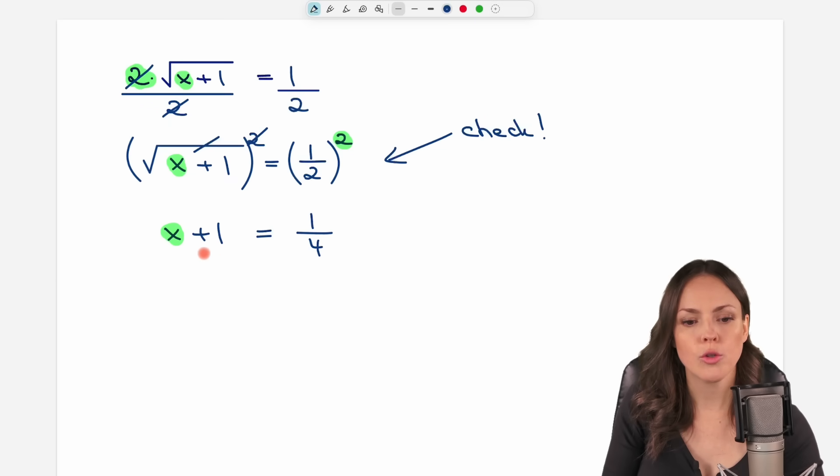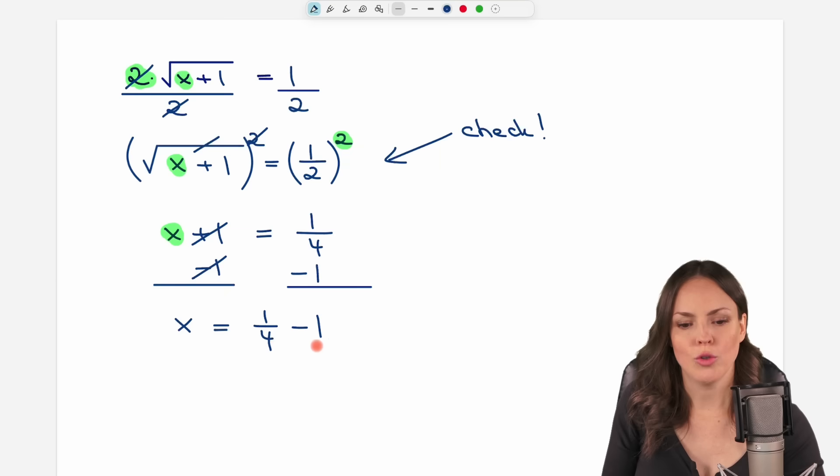We just want to solve for x, so we subtract the 1 on both sides of the equation so that we only have our x here, because this cancels out. On the other side, we have 1 over 4 minus 1. To subtract this, we can write the 1 as a fraction as well, 1 over 1. We need the same denominators, so let's multiply by 4. 1 times 4 equals 4. Now we have the same denominators and we can subtract. 1 minus 4 equals negative 3, and we keep our denominator. Negative 3 over 4 is a result, but we have to check it.